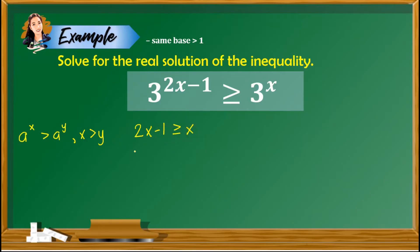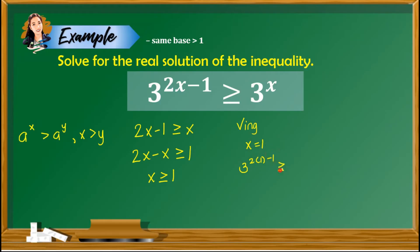Next is to combine like terms, so we have 2x minus x is greater than or equal to 1, which simplifies to x is greater than or equal to 1. To check, we take x equals 1: 3 raised to 2 times 1 minus 1 is greater than or equal to 3 raised to 1. Simplifying, we have 3 raised to 1, which is 3, greater than or equal to 3. Since this is true, 1 is part of the solution.